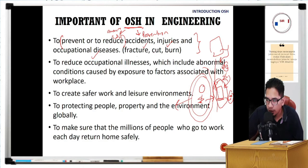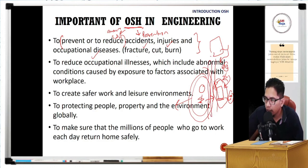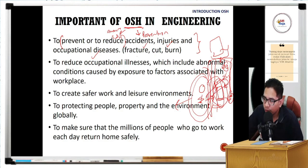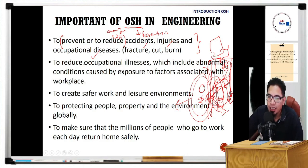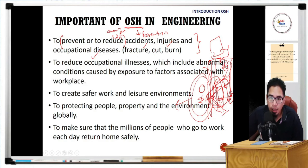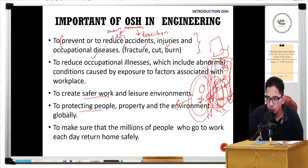Other prevention methods include engineering controls - such as building a barrier or enclosure around a hazardous area. The next importance of OSH is to reduce occupational illness caused by exposure to harmful factors. OSH also aims to create safer work environments, protect people, property, and the environment, and ensure that the millions of people who go to work each day return home safely.